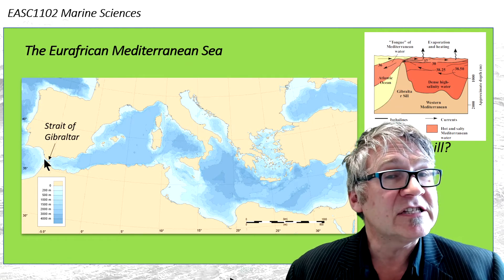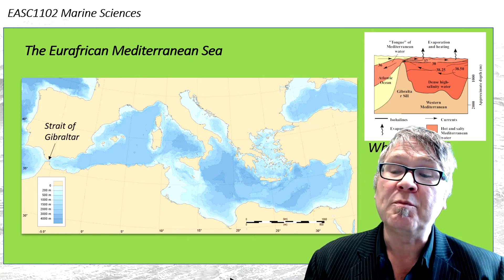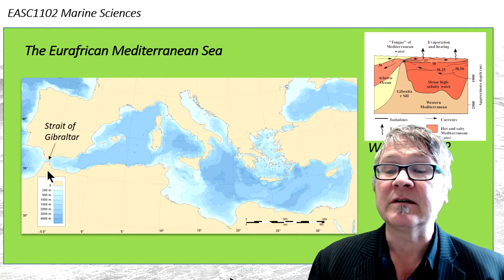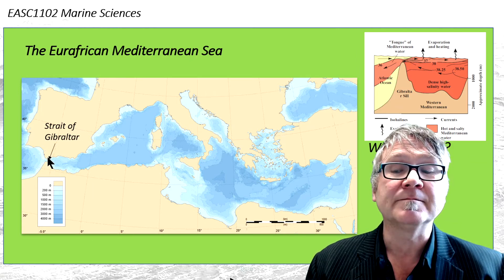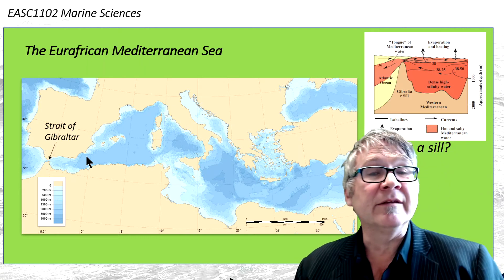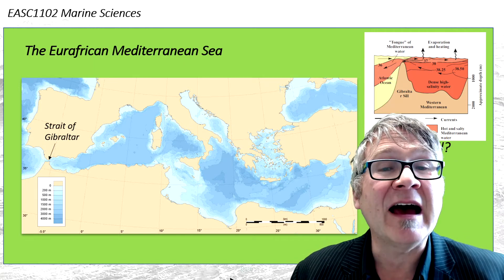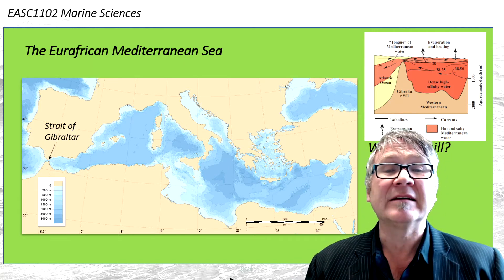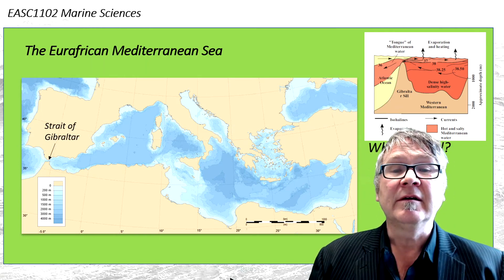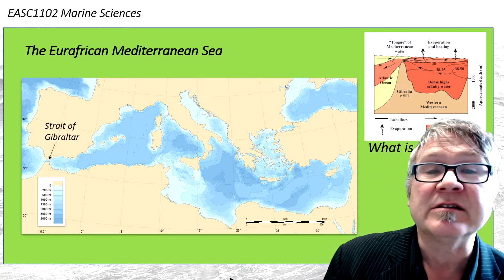The Strait of Gibraltar is a key smuggling route for smugglers traveling from northern Africa to Europe. It is also the reason why the Eurafrican Mediterranean Sea is more or less isolated from the Atlantic Ocean — it is constrained. The image above shows the salinity structure of this region.